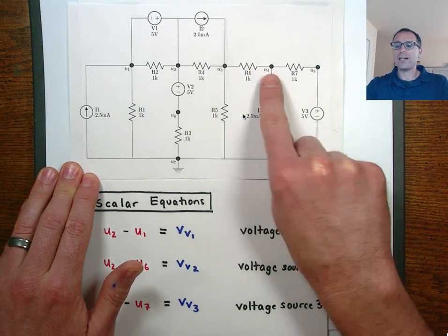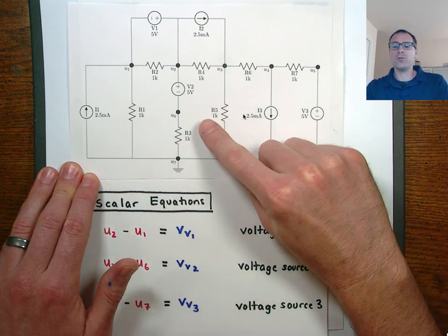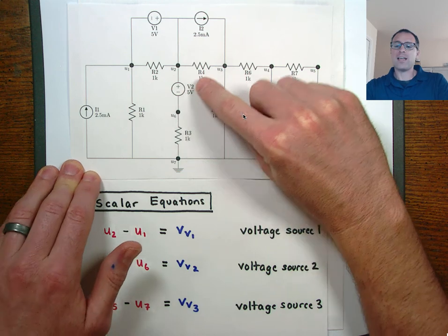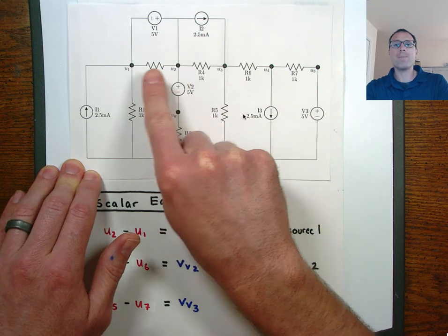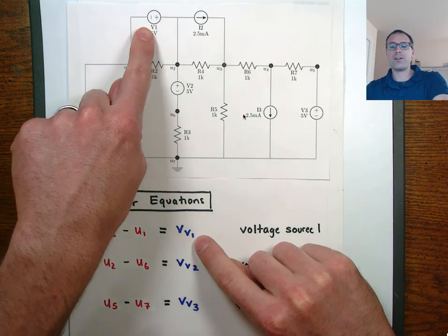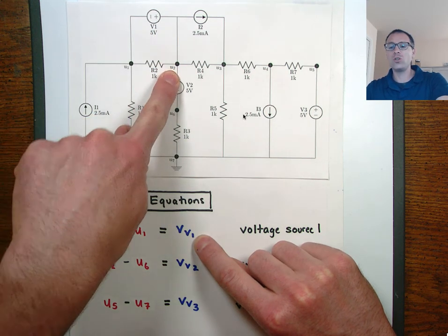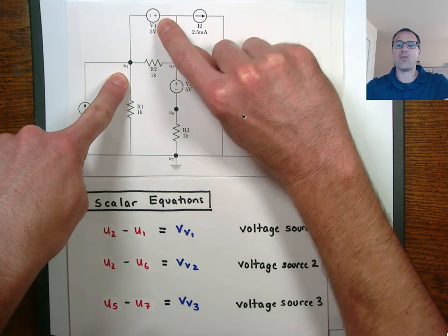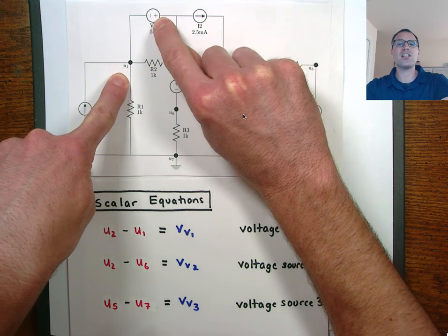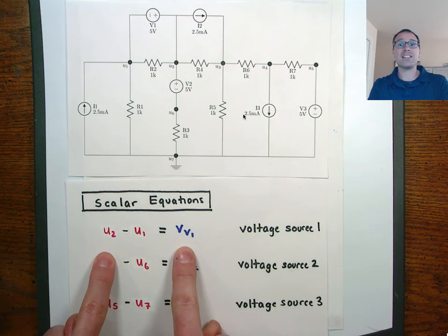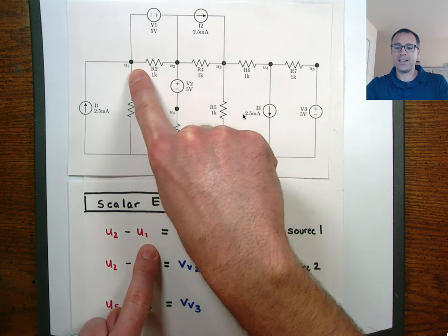These little dots right here, we call nodes. The claim is that in order to find the voltage drop across an element, we look at the node potential difference. If I wanted to define the voltage drop across voltage source one, that's going to be node potential U2 minus node potential U1. The reason we have positive U2 minus U1 is that's the direction of that voltage source. As a scalar equation: V_V1 = U2 minus U1.